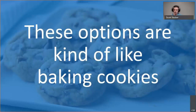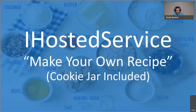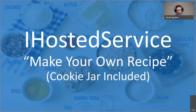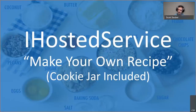The first option is IHostedService, which is like the make-your-own-recipe example where you have raw ingredients but the cookie jar is included. The cookie jar represents ASP.NET Core — though there is a nuance in that you can technically host IHostedService outside of ASP.NET Core, which we'll touch on later. So what is an IHostedService exactly?